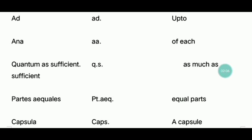Now, if you have 5 different types of tablets in the description — Paramine, Paracetamol, Amoxelins, Cetris — if you have 5 different types of tablets, you can choose one tablet. Quantum sufficit means 'as much as sufficient'.